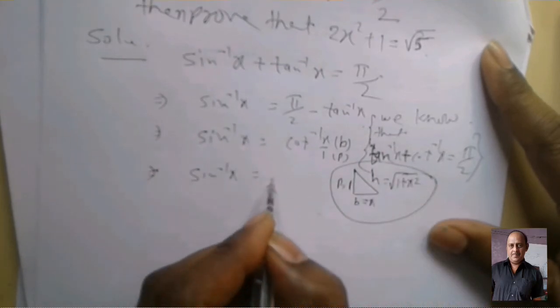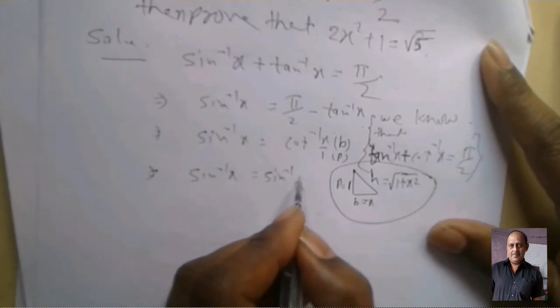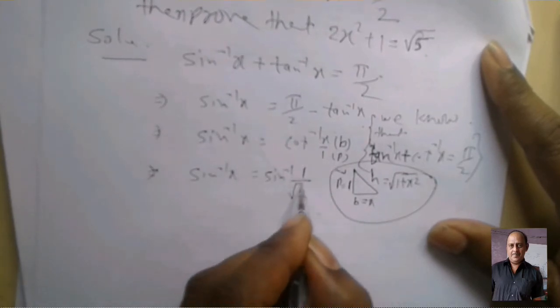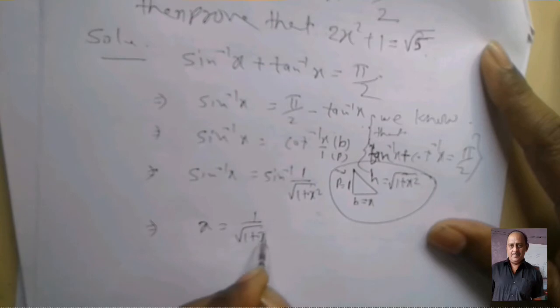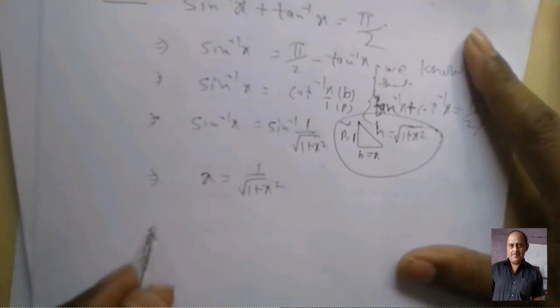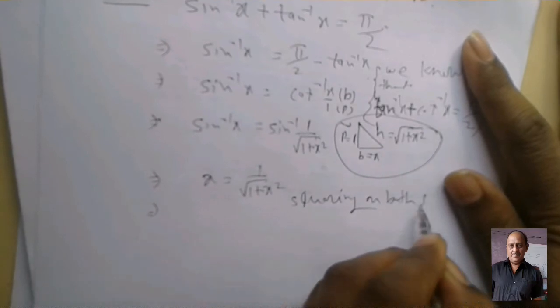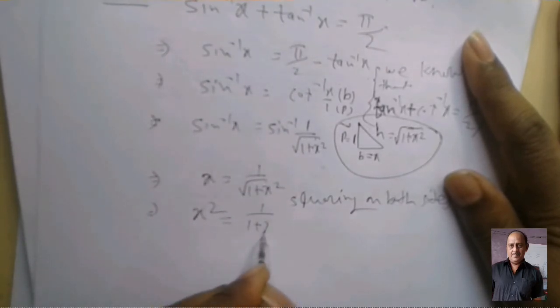This value. Now sin inverse, sin inverse perpendicular upon hypotenuse: perpendicular 1, hypotenuse 1 plus x² under root. We compare x equal 1 upon root 1 plus x². Squaring on both sides, x² equal 1 upon 1 plus x².